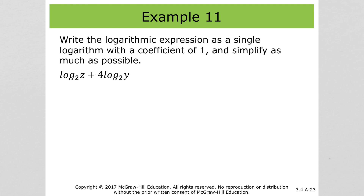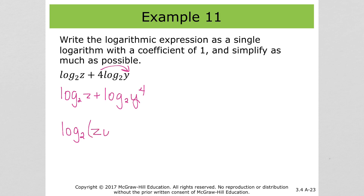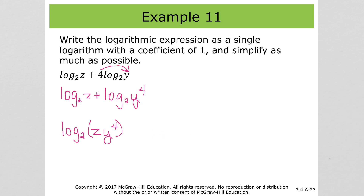Here we're adding. Make sure your bases are the same, because if they're not, you can't combine them. First, take this 4 and put it as the exponent: log base 2 of y to the 4th power. Since we're adding, this becomes log base 2 of (z times y to the 4th). Make sure you use parentheses so it's clear both z and y to the 4th are inside the log.